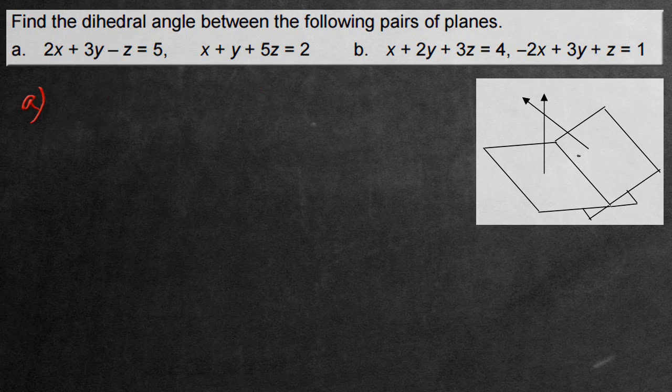This diagram over here kind of exemplifies what we're trying to do. Specifically, it asks for the dihedral angle, which is generally the acute angle, the smaller one. In this particular case, it would be this angle from the perspective you're seeing on top, not the one below. Let's get started.